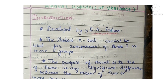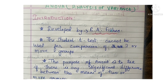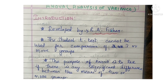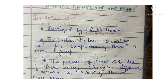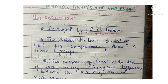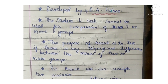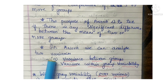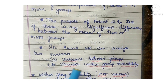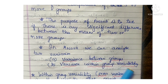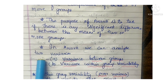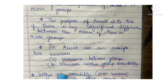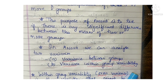The purpose of ANOVA is to test if there is any significant difference between the means of 2 or more groups. In ANOVA we can analyze 2 variances: variance between groups, and variance within group variability.